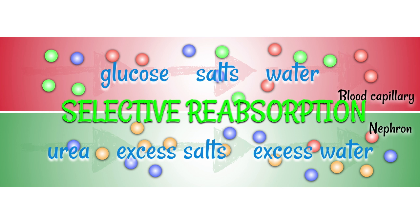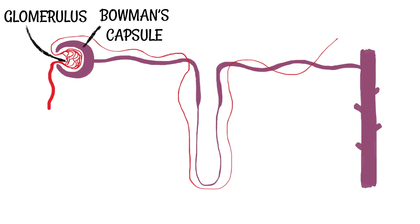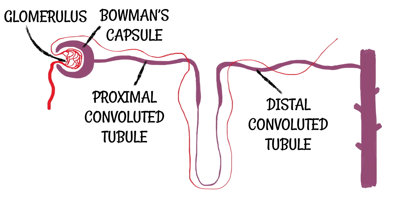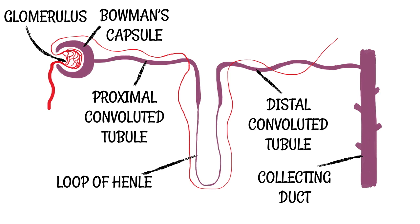Let's look at all of the labels that go on the nephron. You already know the glomerulus and the Bowman's capsule, often known as the renal capsule. The two tube areas are known as the proximal convoluted tubule and the distal convoluted tubule — the parts that come before and after the loop in the middle. This loop is known as the loop of Henle, which has two parts: the descending limb, where material goes down, and the ascending limb, where it rises up. Next is the collecting duct, where all material from the tubule enters before exiting the kidney through the ureter.